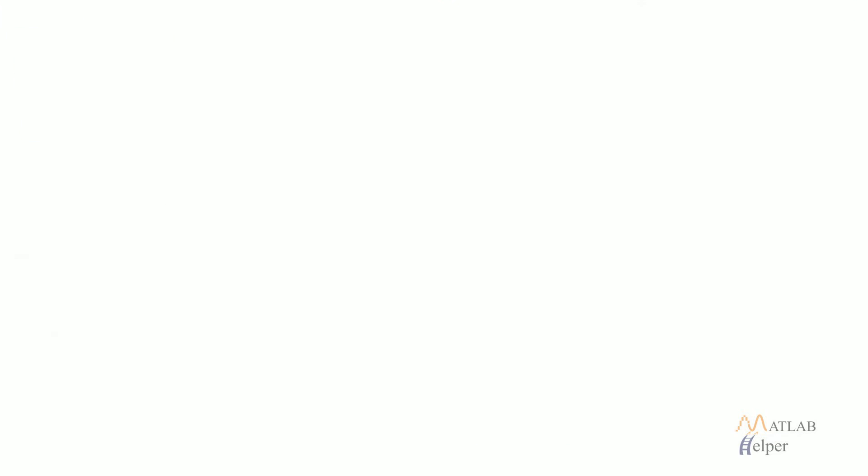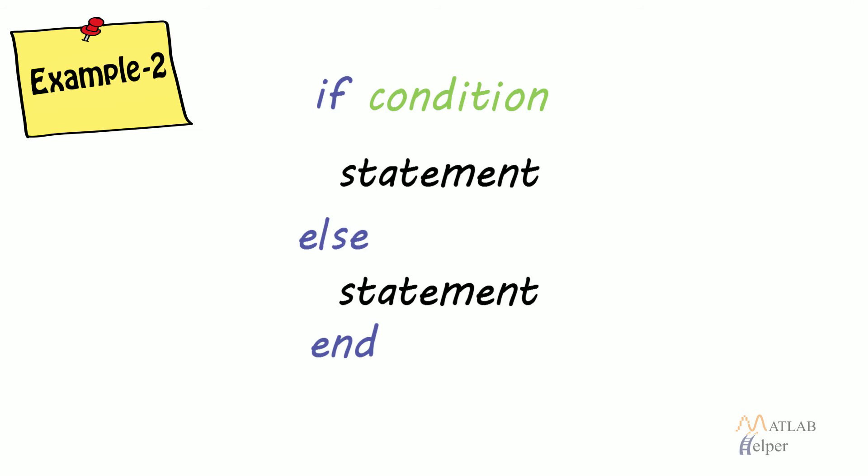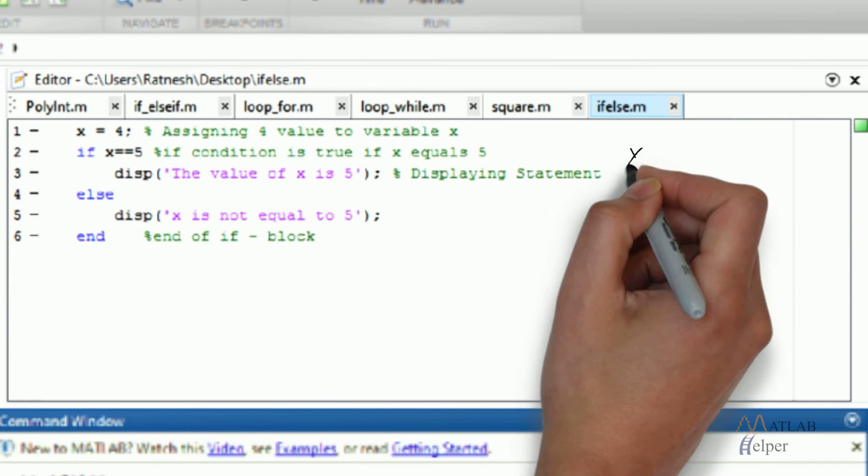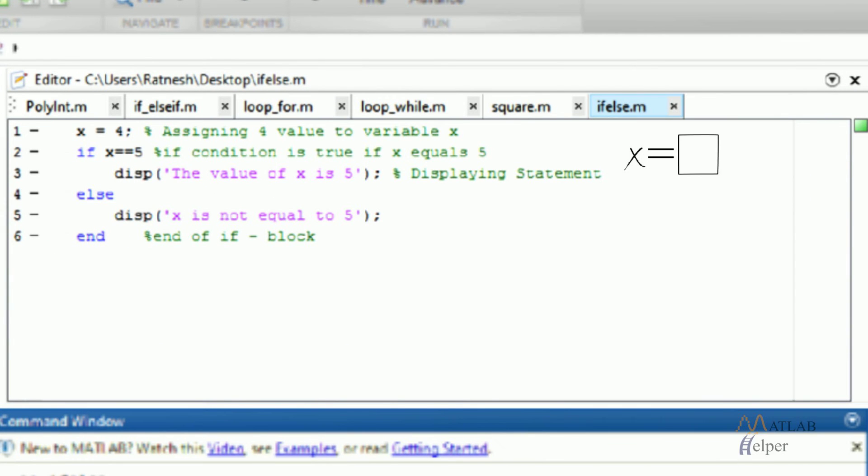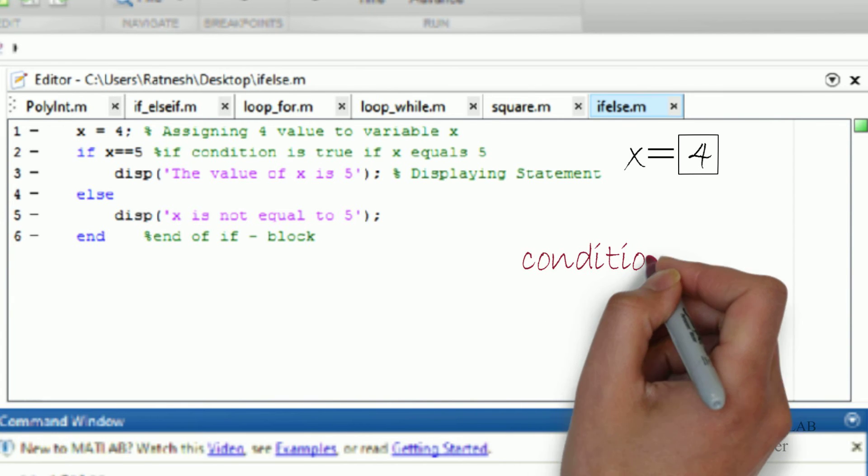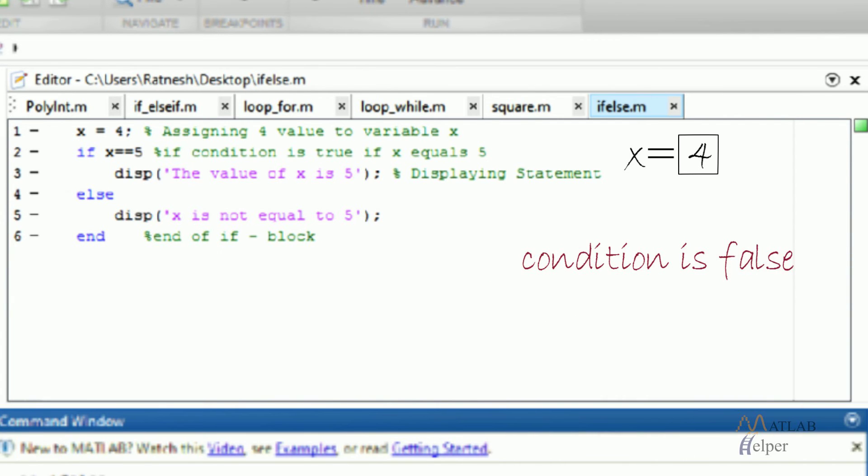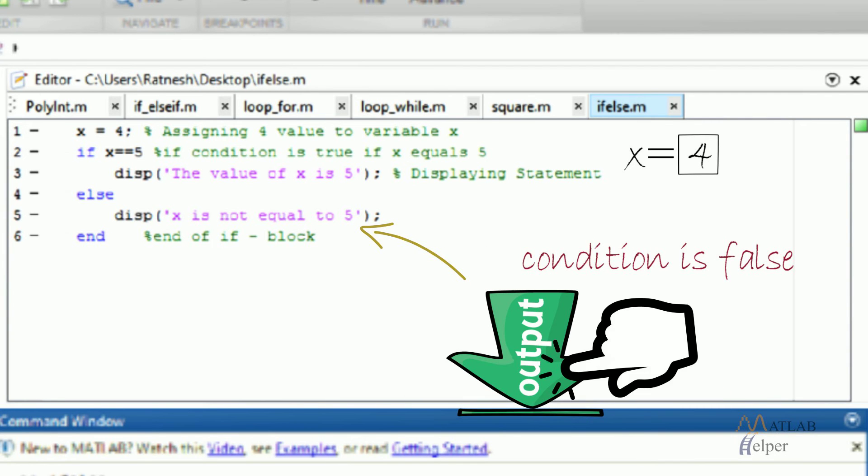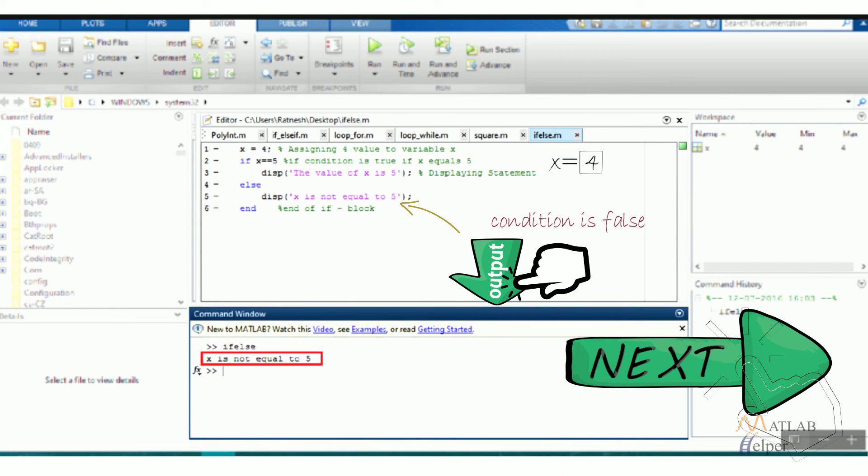Example 2: If else block. In the given example, x is assigned value 4, so the if condition is false. Since there is no other if or else if condition, the statement inside the else block will be displayed. Else is similar to a default block.